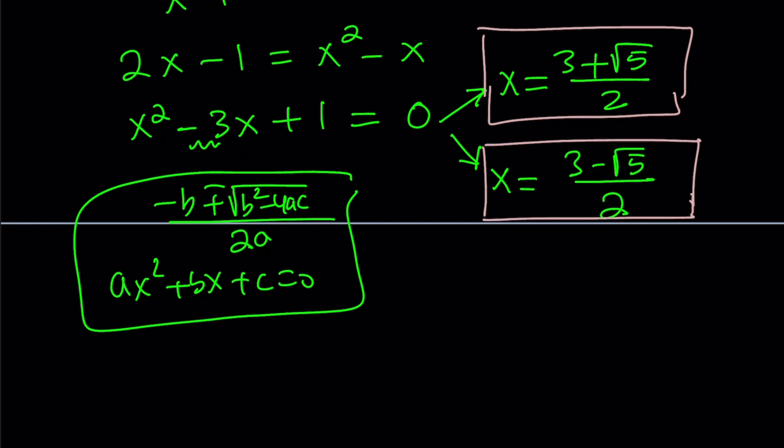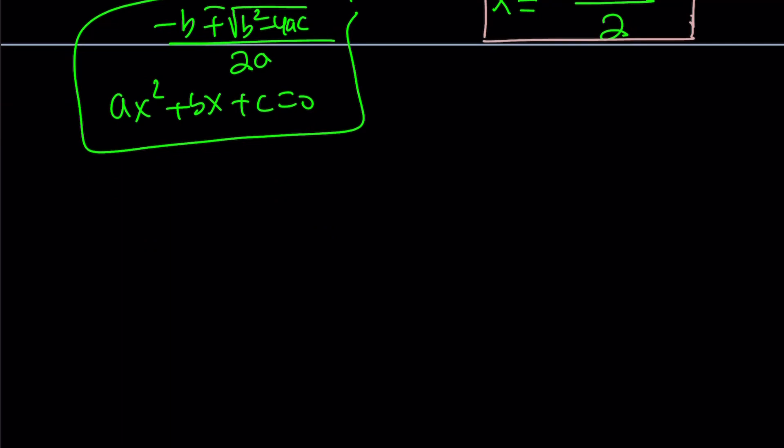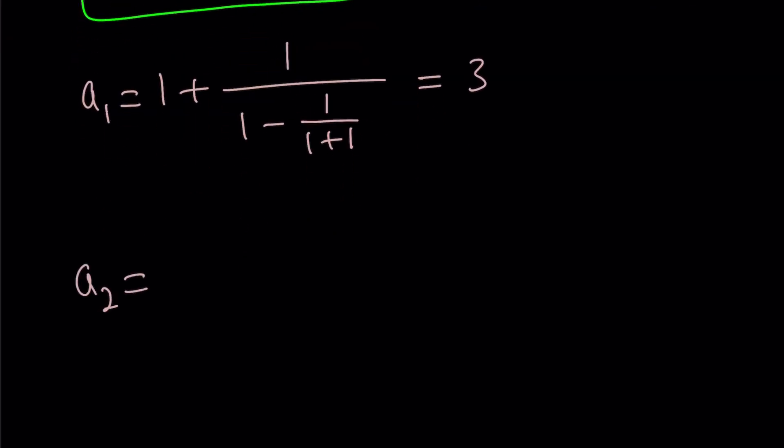What does this look like from a sequence standpoint? If we write the terms one by one, start off with 1 plus 1 over 1 minus 1 over 1 plus 1. Stop at the 1 plus 1 and let this be our first term. Let's call this a sub 1. Let's evaluate it. 1 minus half is 1 half. Reciprocal is 2. 1 plus 2 is equal to 3. How about a sub 2? Well, a sub 2 is just going to be the same thing. You just have to continue like one more iteration. 1 plus 1 over 1 minus 1 over 1 plus 1.